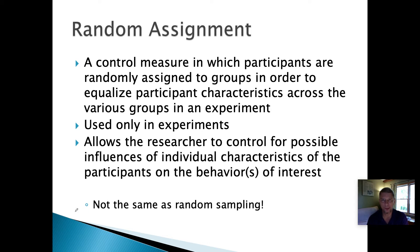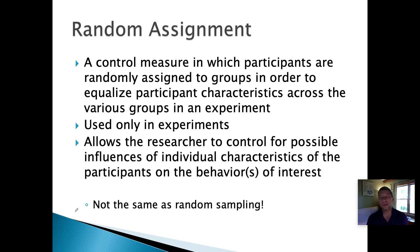Random sampling means the people you're observing are chosen randomly from a large population so everybody has an equal chance of being in your study. Random assignment means that once you've randomly sampled your group, you divide it and randomly put each person into one of the two groups you are measuring. They're similar and both begin with the word 'random,' but they're not the same.